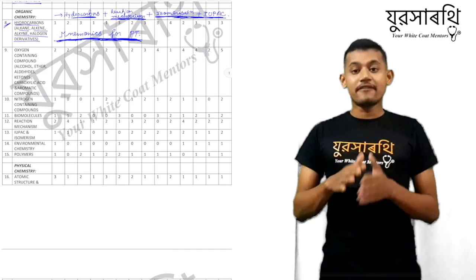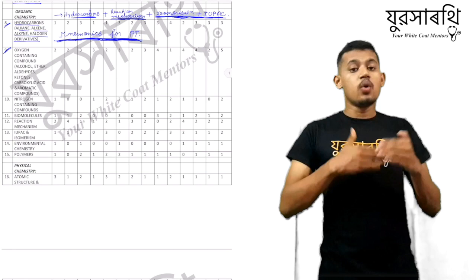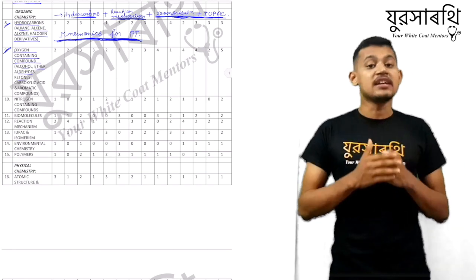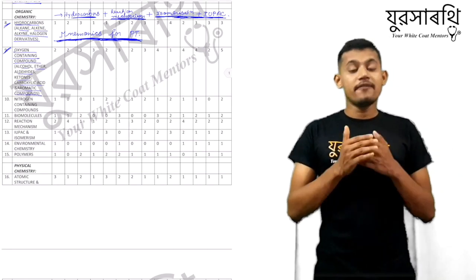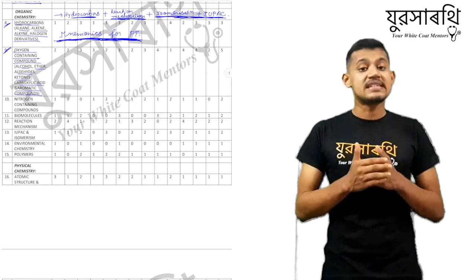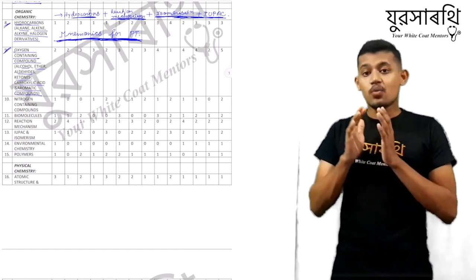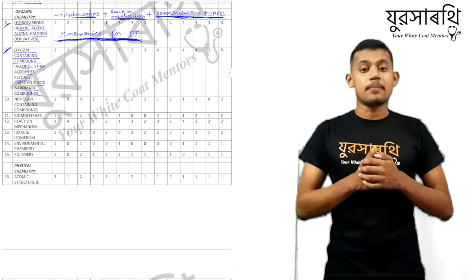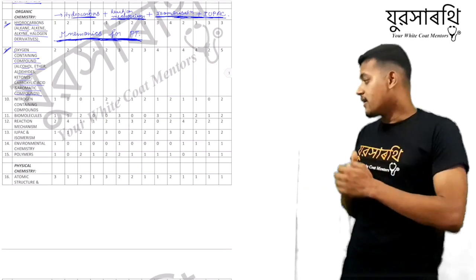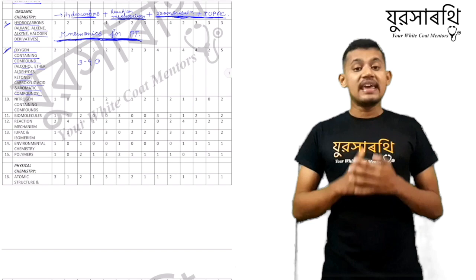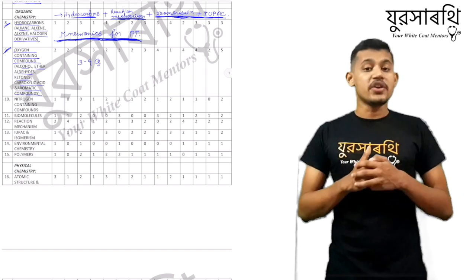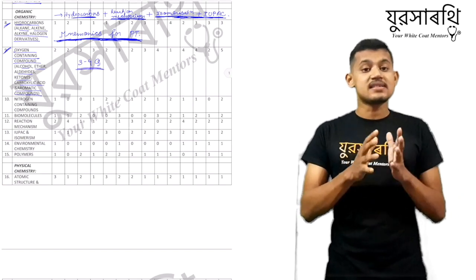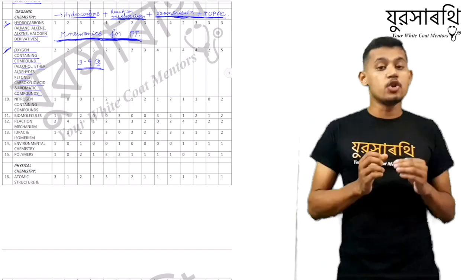Next after hydrocarbons, we have oxygen containing compounds — that is alcohol, phenol, ether, carboxylic acid and its derivatives. It is quite a deep chapter. From this topic, oxygen containing compounds, they ask around three to four questions every year. So it is very important after hydrocarbons.